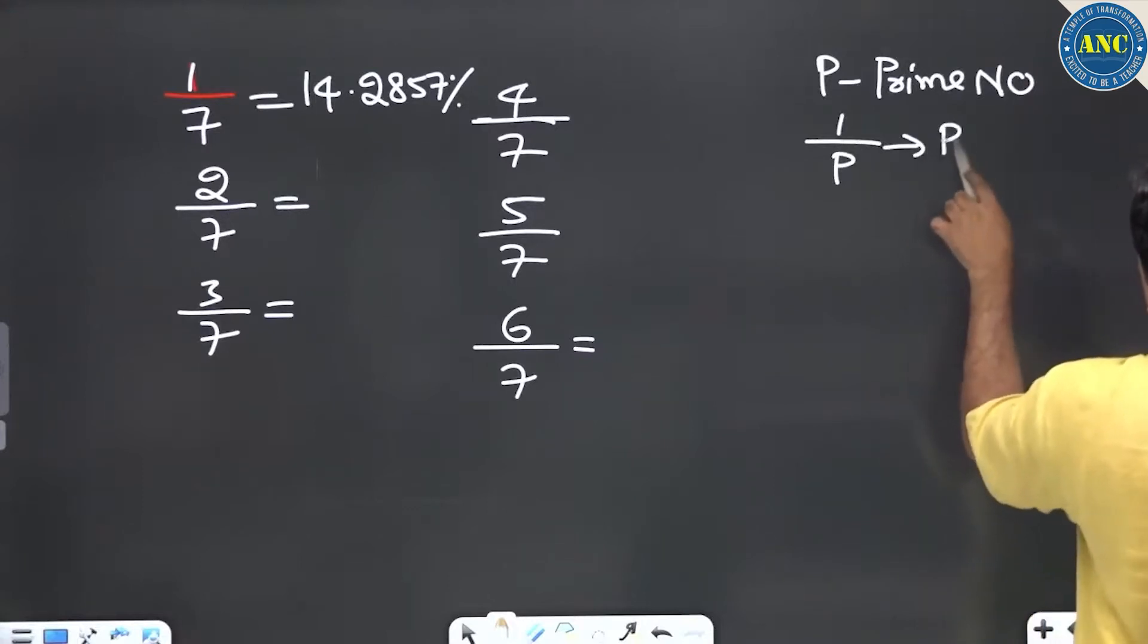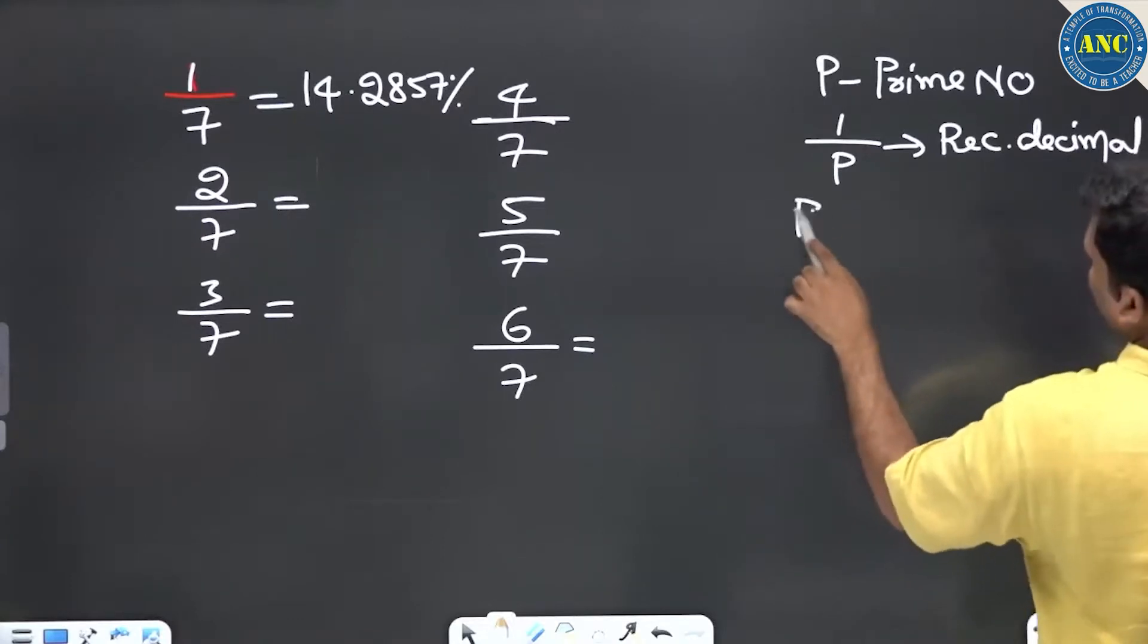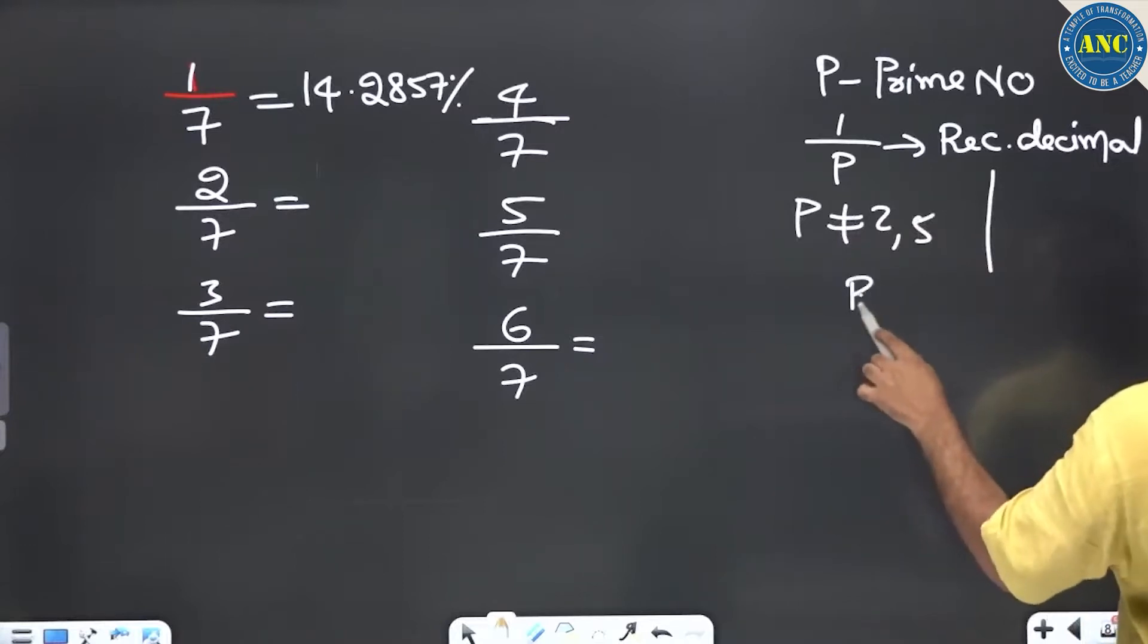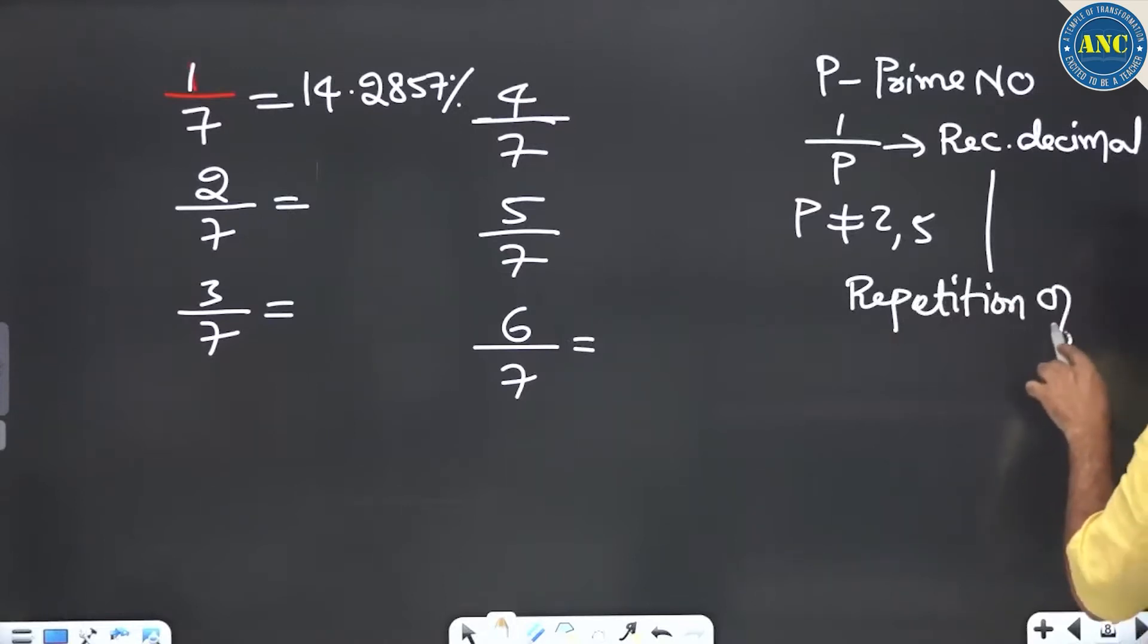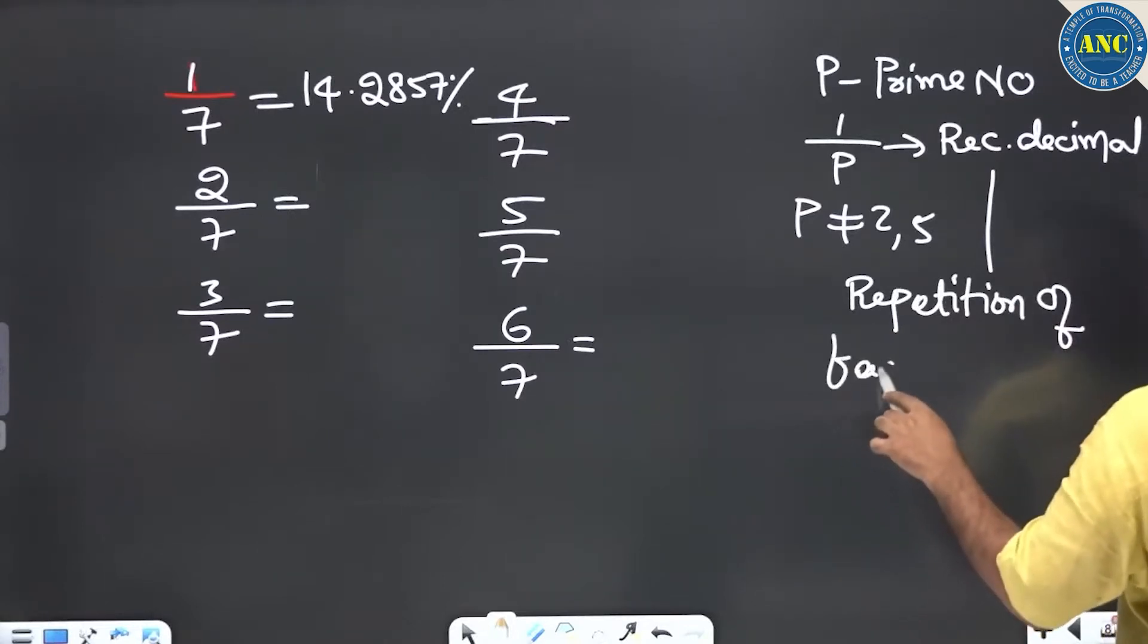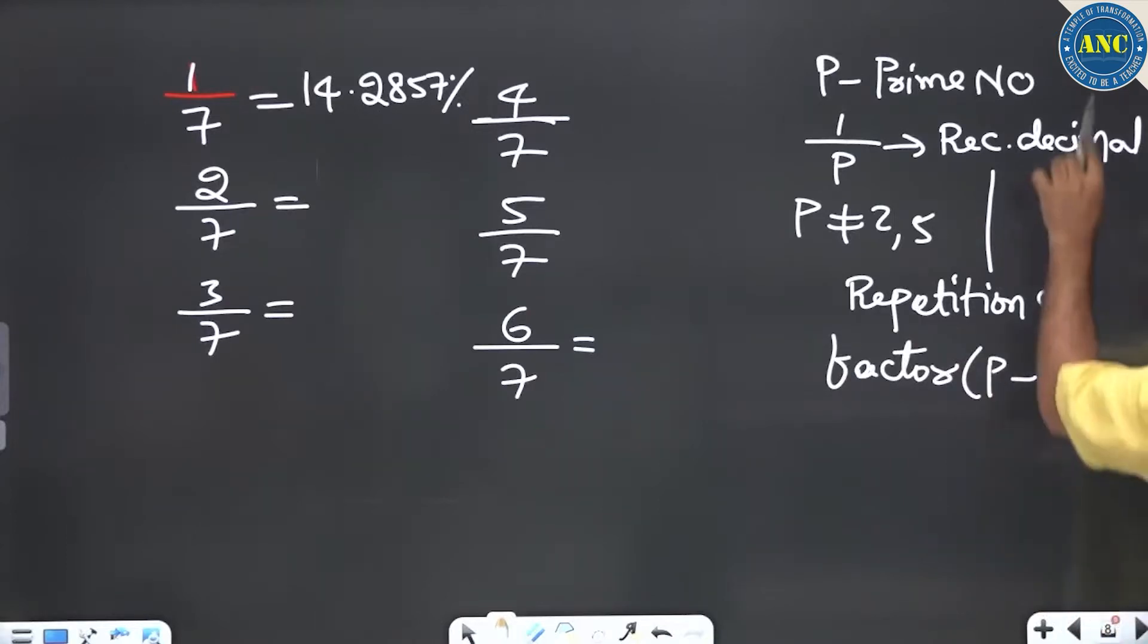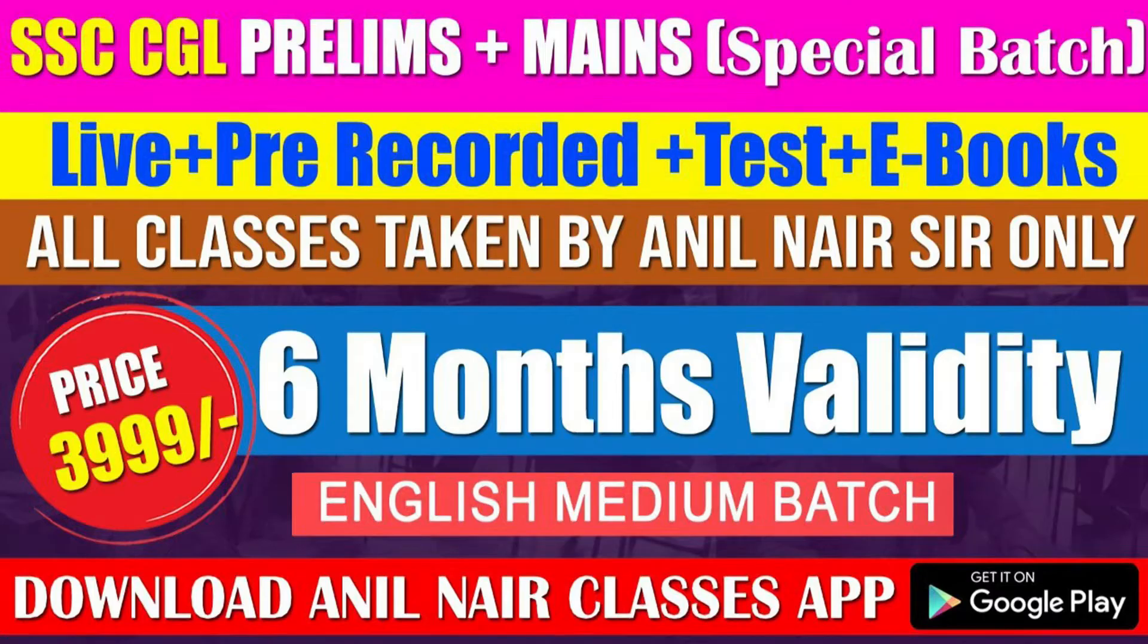If p is a prime number, 1/p is a recurring decimal (p not equal to 2, 5) with a repetition of factor of p minus 1. Please write down this concept in your notebook. Most of the concepts I am teaching you will not find in any regular placement aptitude books.